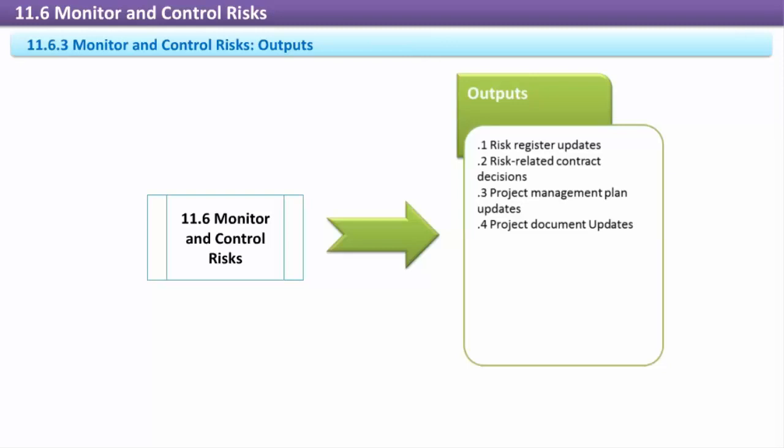Outputs. Risk Register Updates: Risk monitoring and controlling can result in updates to the risk register, such as priority changes, trigger, symptom, or warning sign changes, or a change in risk responses due to the ineffectiveness of the original response.